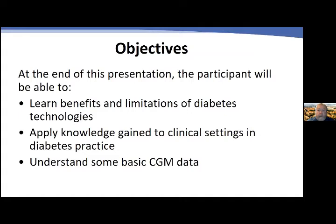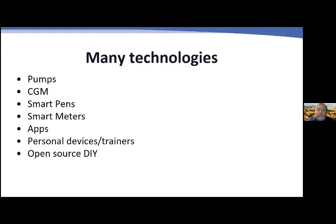Our objectives are to learn the benefits and limitations of different diabetes technologies, to apply that knowledge to clinical settings and diabetes practice, and to understand some basic continuous glucose monitor data. Today we'll be talking about pumps, continuous glucose monitors, smart pens, smart meters, different apps, personal devices, and off-label open-source closed-loop diabetes pump and CGM technologies.